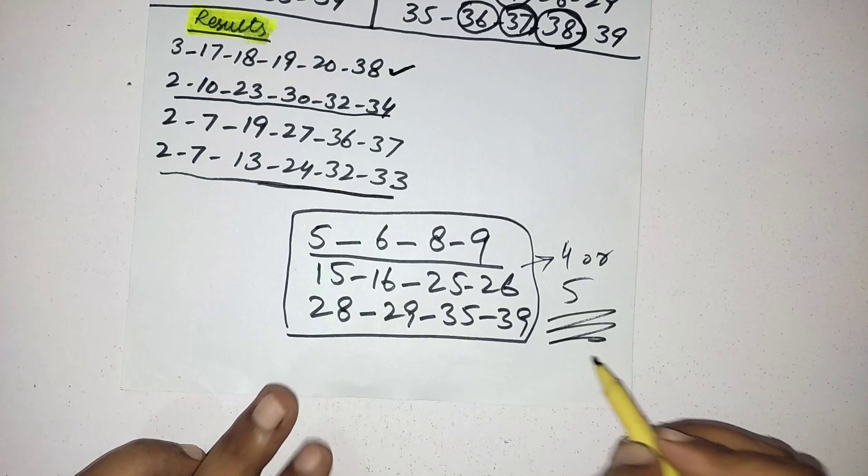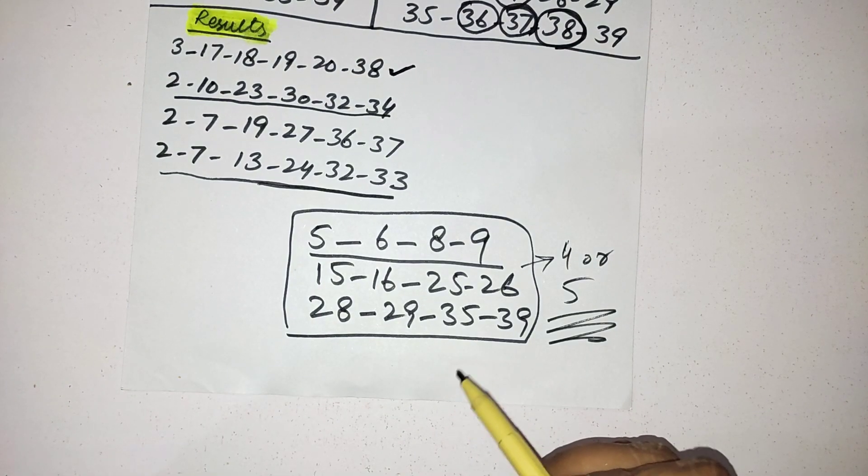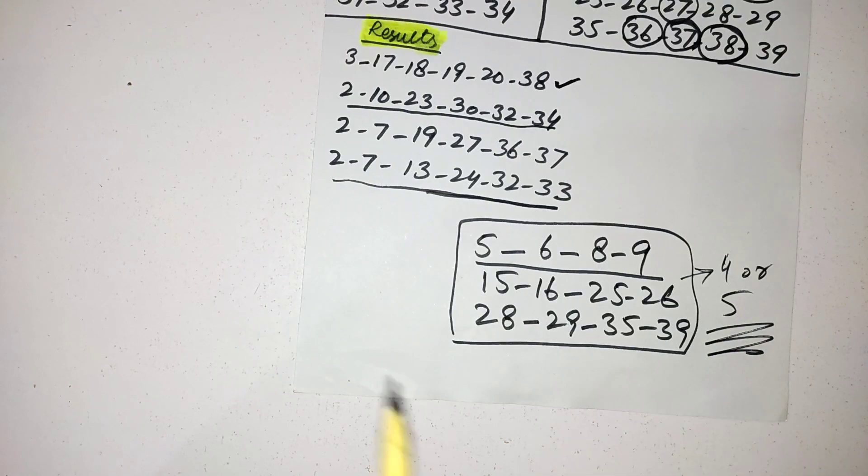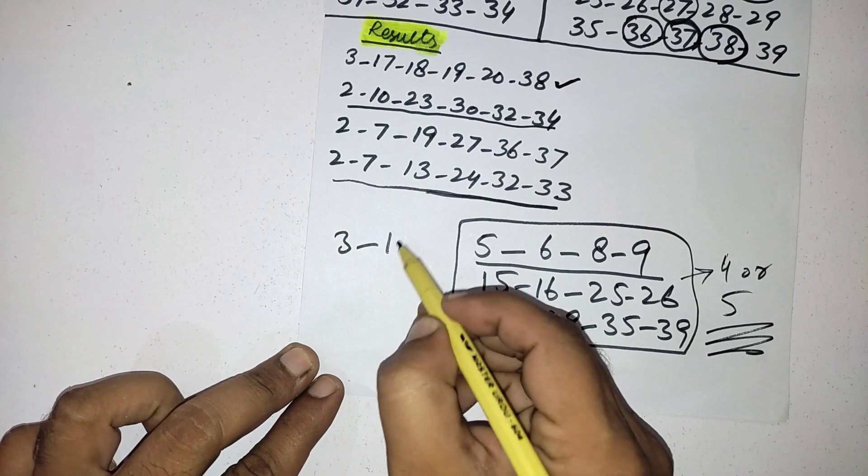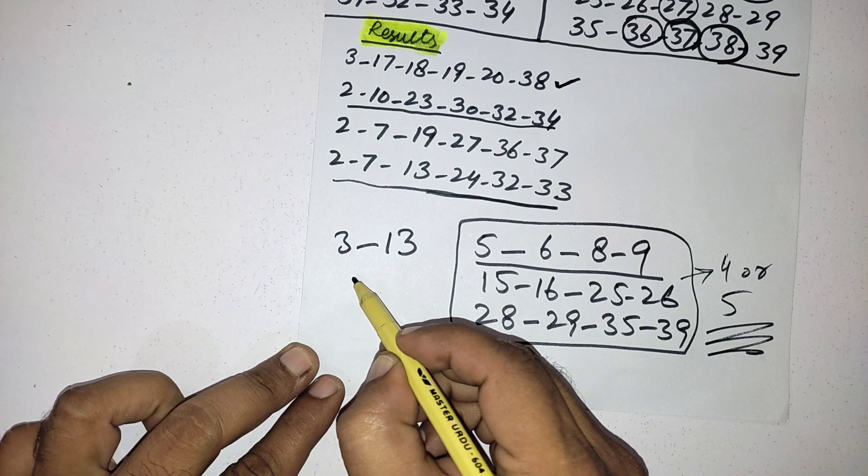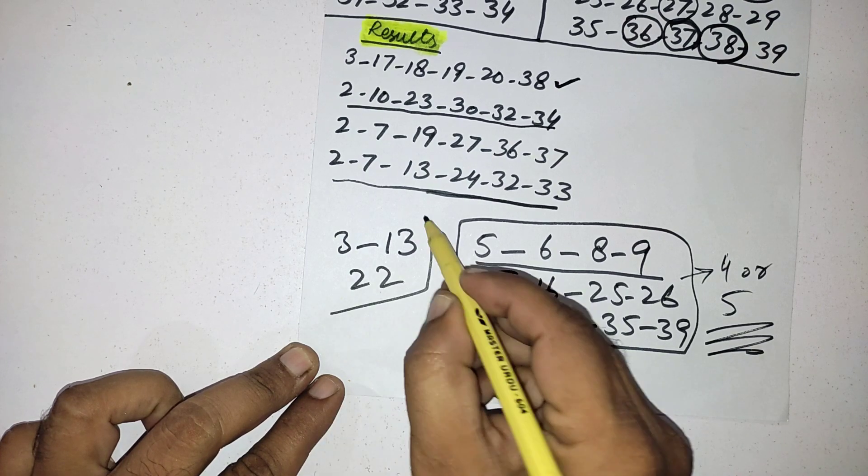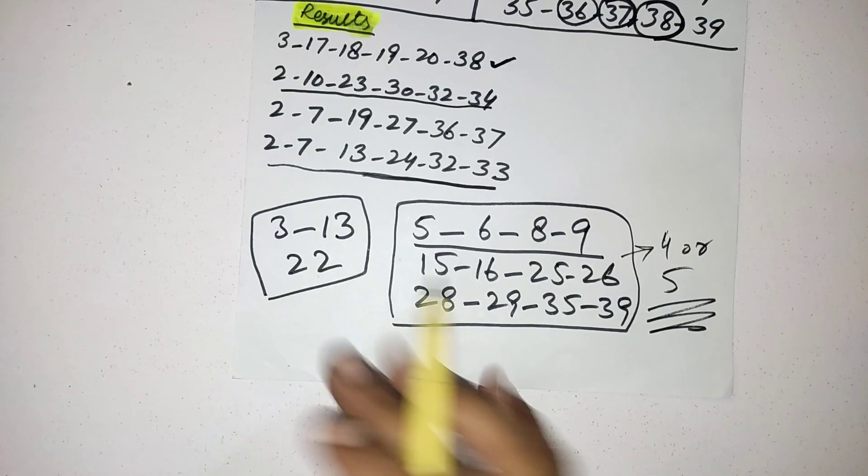And remaining 1 or 2 numbers from short numbers. I have some short number best numbers for this draw: 3, 13, and 22. These are the short numbers. You should select 1 or 2 numbers from here.